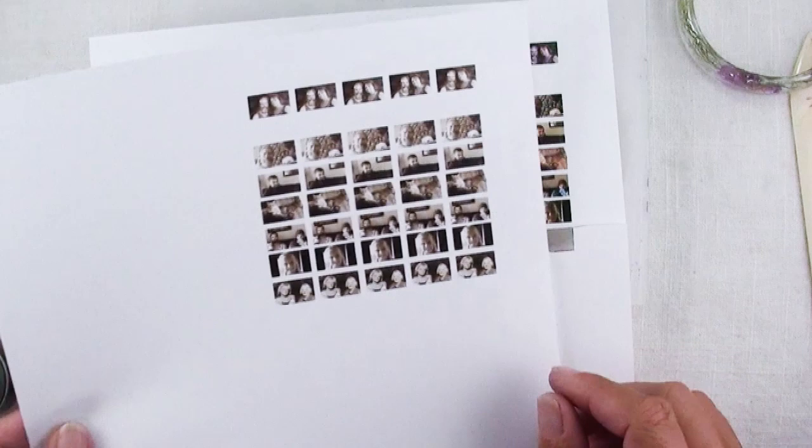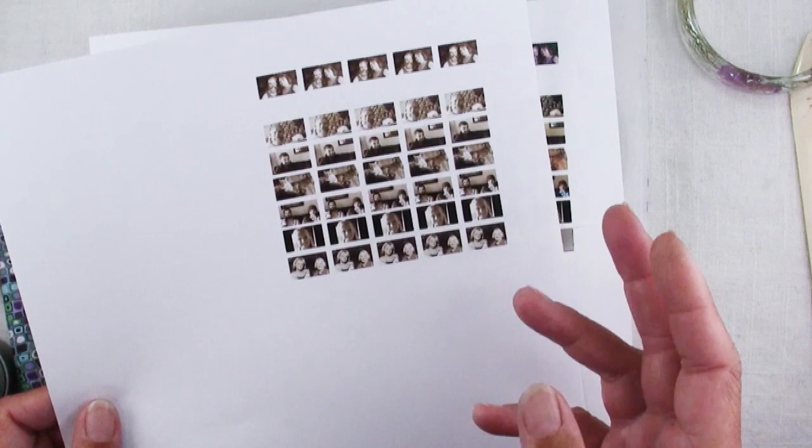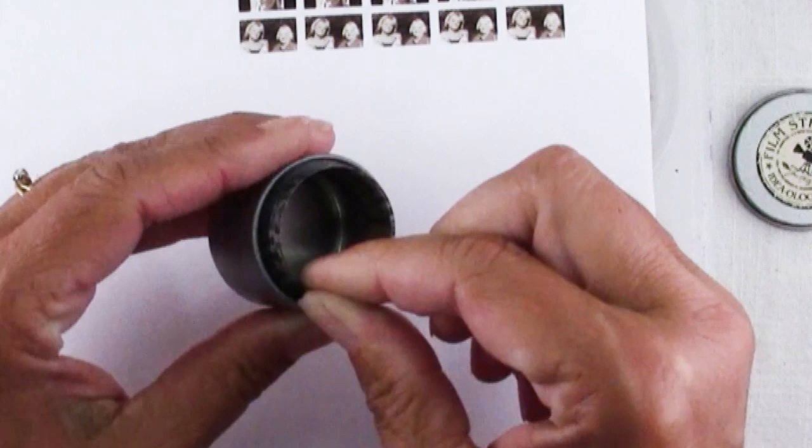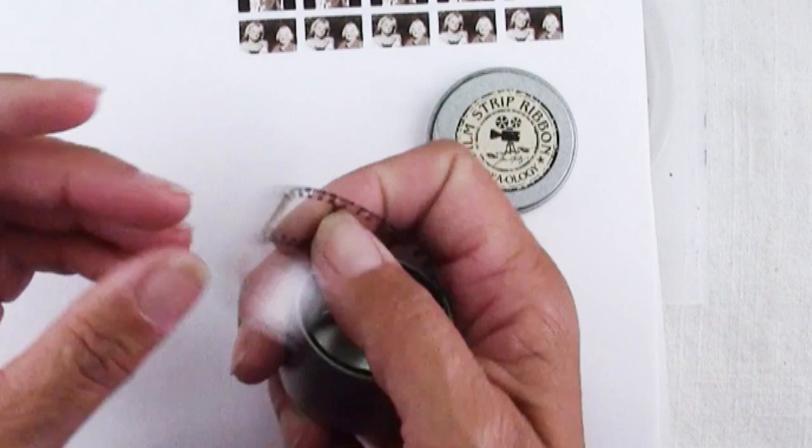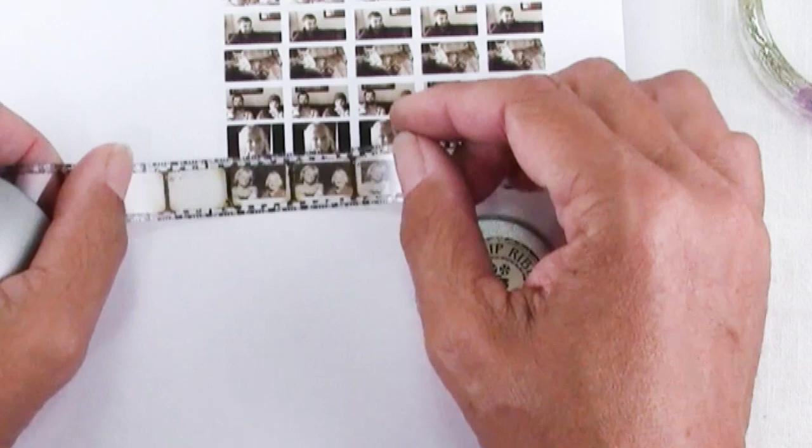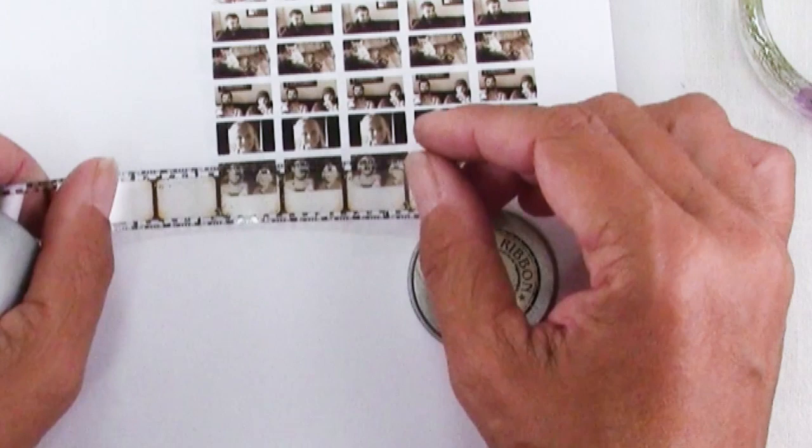I made all of mine landscape, but you could definitely have them going portrait if you want them to go sideways around your bracelet. And I will show you what I mean because I'm basing this whole project on using this stuff. It's Film Strip Ribbon. It's from Tim Holtz and it's really cool. It's a plastic strip about 5 eighths of an inch wide that looks like old time film. And so I have sized my photos so that each one will fit inside one of these frames.